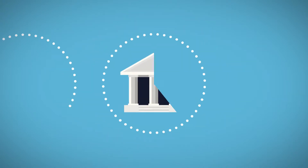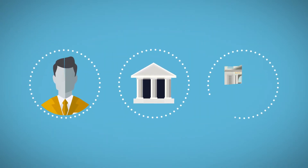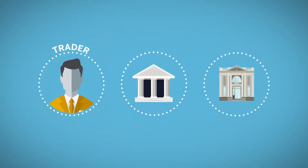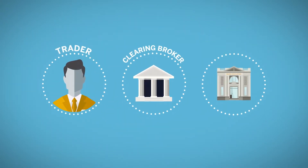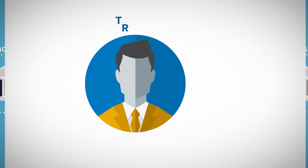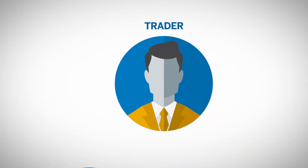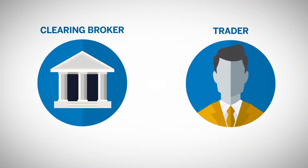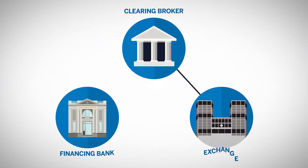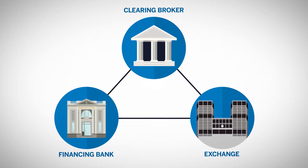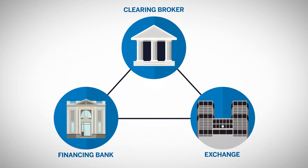A list of such warrants is sent to the financing bank. There is no tripartite agreement between trader, clearer, and financing bank, but rather: 1. an agreement between trader and clearer, and 2. a tripartite agreement between exchange, clearer, and financing bank.